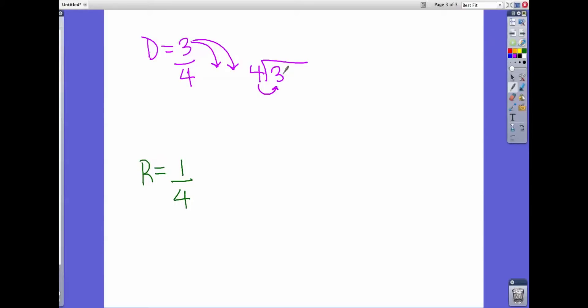Now, four cannot go into three. It goes in zero times, so that's not possible. So what we have to do is put in a decimal, and then put in a zero. And if we put a decimal inside of the square, we also have to put a zero on the outside, and a decimal on the outside.